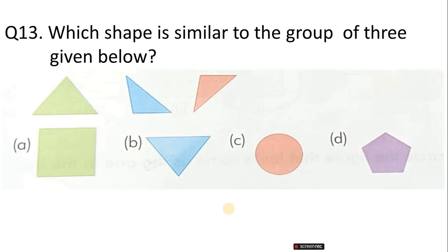Question 13. Which shape is similar to the group of three given below? Correct answer is option B.